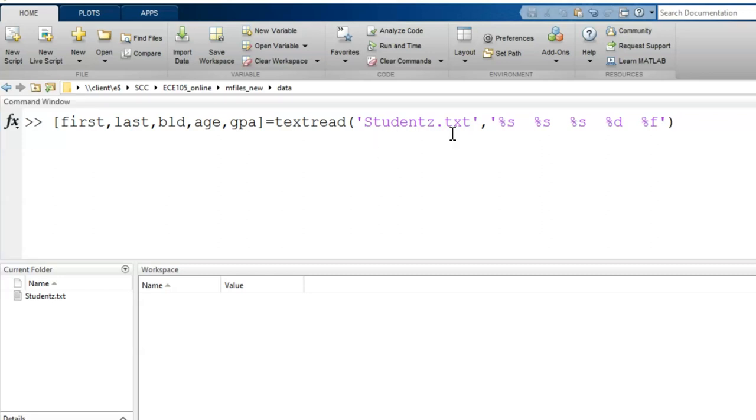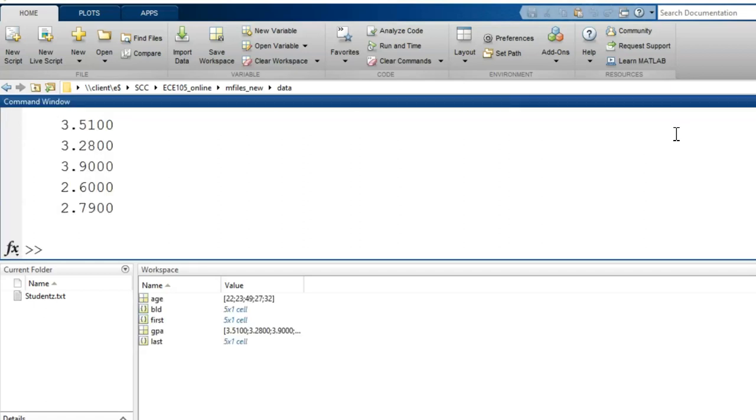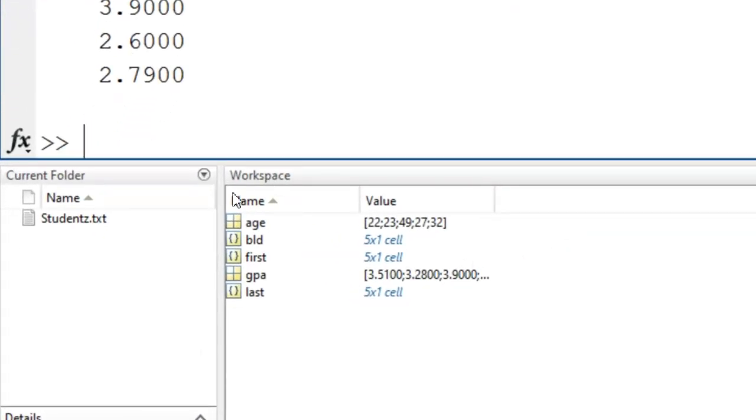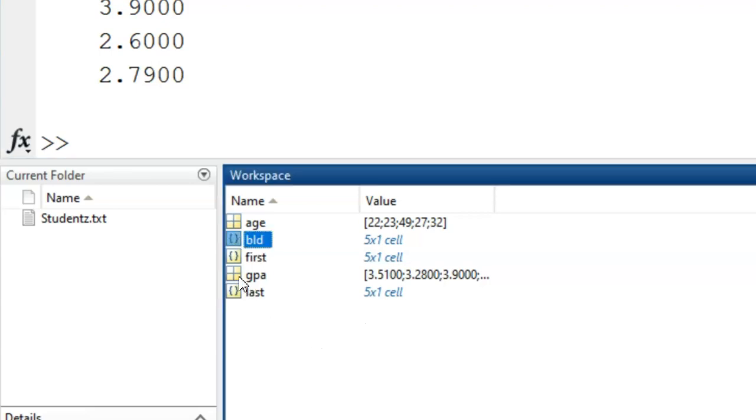The first input argument is the file name. Then, for the second input argument, I list out all the data types as shown. Remember, the first three columns are strings, so I use percent s. The fourth column was of whole numbers, so I use percent d. And the last column was floating point, so I use percent f. After entering the command, all five of those variables holding the column data is now in the workspace. Notice how the string data is stored within cell arrays, but the numeric data as numeric vectors.